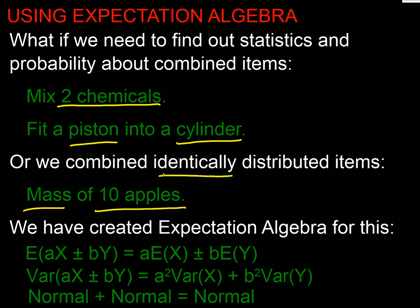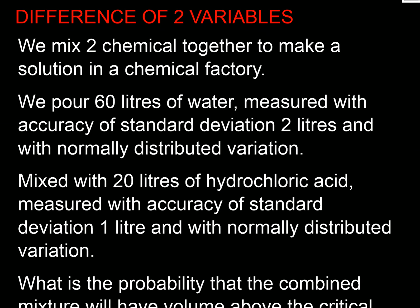So those are cases of finding the sum or difference of two distributions. Another example: filling bags of apples in a supermarket, where each apple has a mass distribution — an identically distributed case. To handle all these, we'll use three formulae from the proofs videos: the expectation of combined variables, the variance of combined variables, and the fact that combining two normally distributed variables gives another normal distribution.